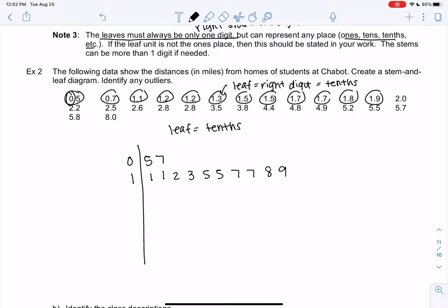And then again, because it says tenths, it means 1.1 not 11, 1.2 not 12. For 2, we have 0, 2, 5, 6, 8, 8. And that's it. Notice I'm trying to keep my numbers about the same size. For the 3s, we have 5 and 8, so 3.5, 3.8. For the 4s, we have 4.4, 4.8, 4.9. 5s, we have 2, 5, 7, and then we also have an 8.